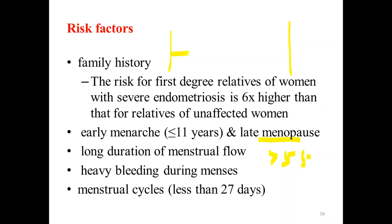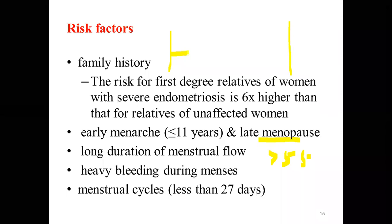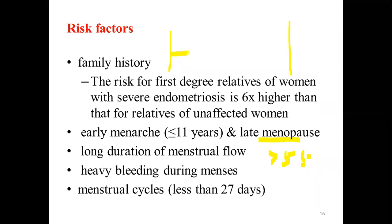Long duration of menstrual flow and heavy bleeding are also risk factors, as they relate to the transport of endometrial cells. The longer the menstrual blood flow, the higher the transport of endometrial cells from the uterus to other pelvic walls.